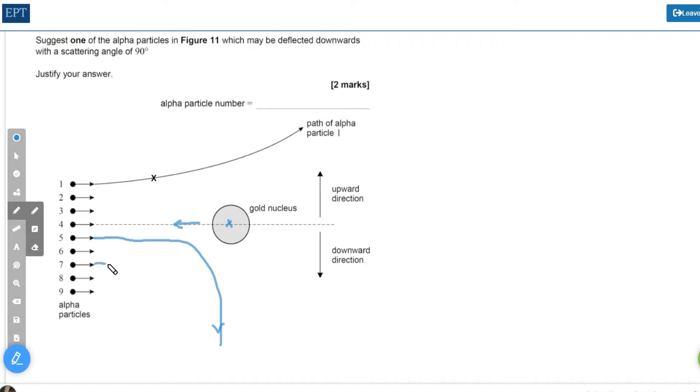Seven, eight, nine are also going to deflect downwards but nothing like enough given that one hardly curves upwards very much at all. So the answer really I would say is five or possibly six.